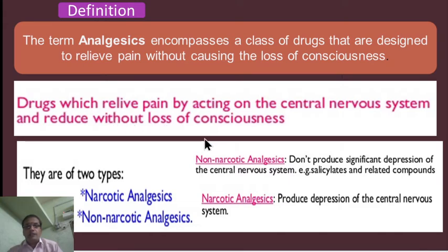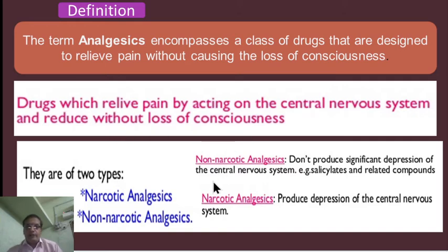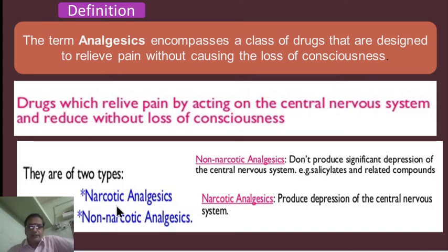That means without loss of consciousness, the person can continue their regular work. If they have any pain, they consult a doctor, the doctor prescribes medicines, and once they take the medicine they are free from pain while remaining conscious and continuing their routine work. These are called analgesics. There is a classification: analgesics are classified into two categories.